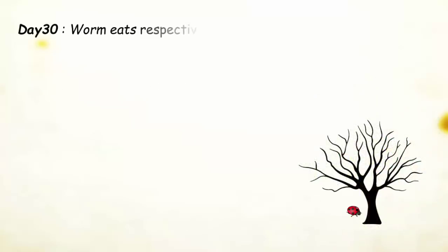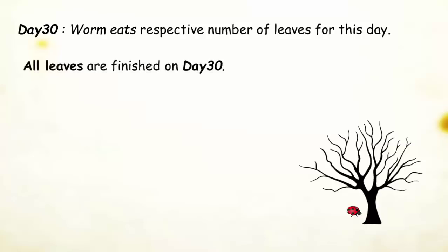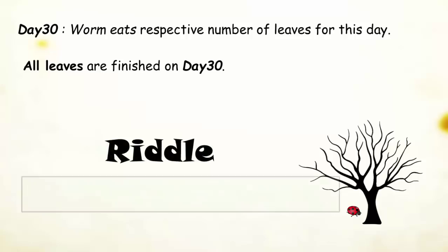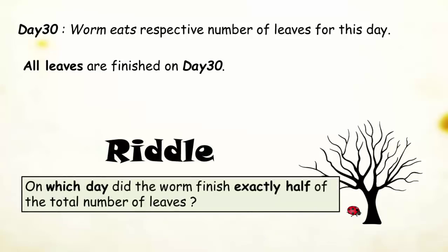On day 30, it eats a corresponding number of leaves for this day and all the leaves on the tree are finished on this day. On which day did the worm finish exactly half of the total number of leaves?